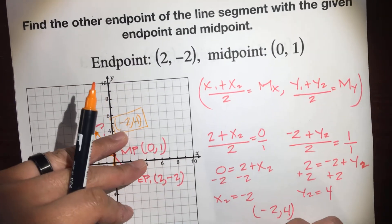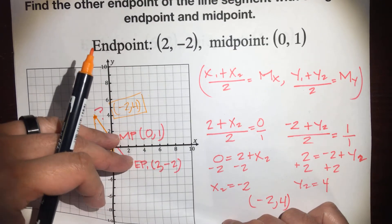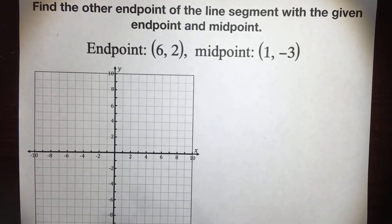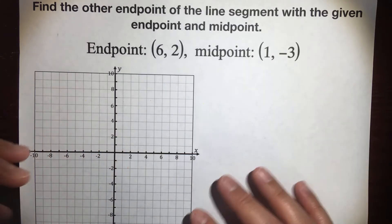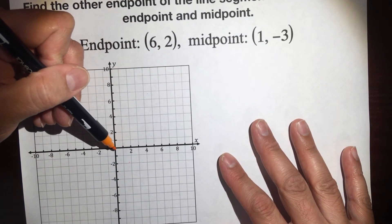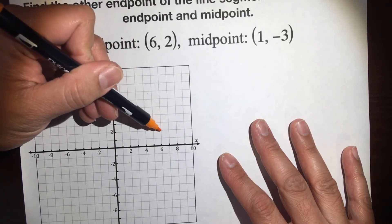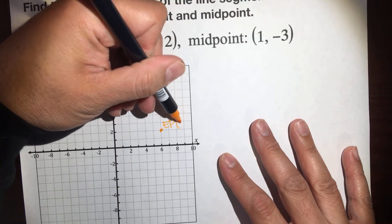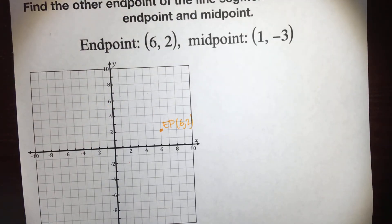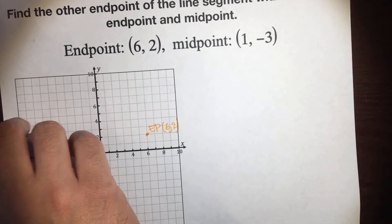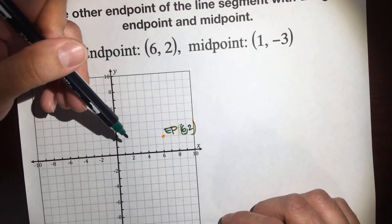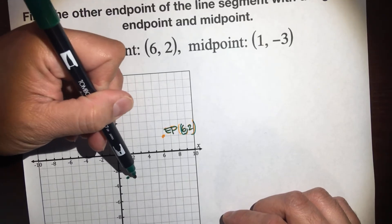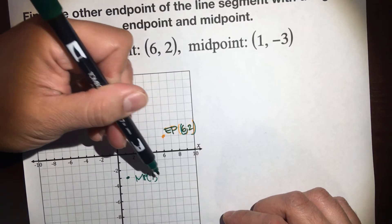So let me give you another example of both ways — I'll do the quick way and I'll do the algebra way. The thing about the graphing way is it only works if your graph paper is big enough. So at (6, 2) — our endpoint is at 6, up 2. So here's our endpoint at (6, 2). And our midpoint is at (1, -3) right here. So our midpoint is at (1, -3).